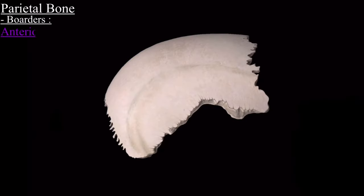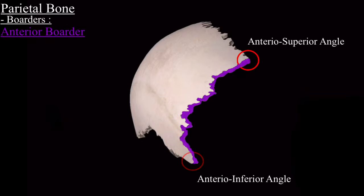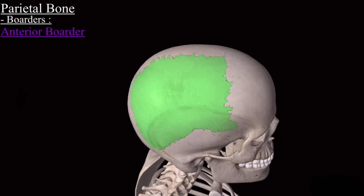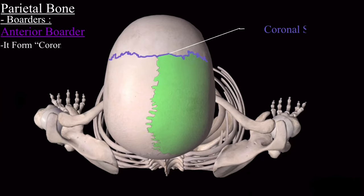Next is the anterior border, extending from the anterior superior angle to the anterior inferior angle. In the complete skull model, the anterior border connects the parietal bones to the frontal bone. Both anterior borders of the parietal bones together with the frontal bone form a suture called the coronal suture.